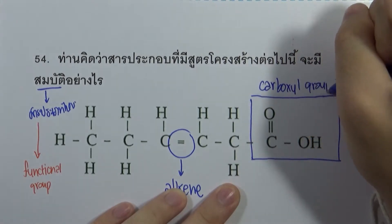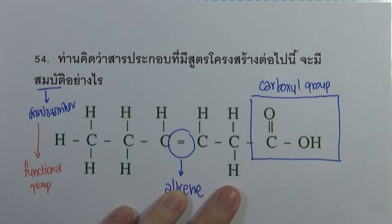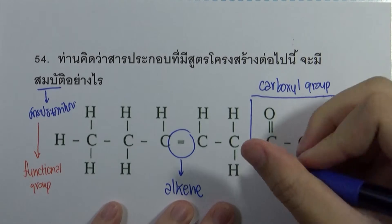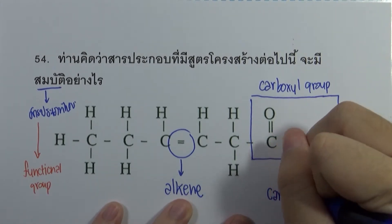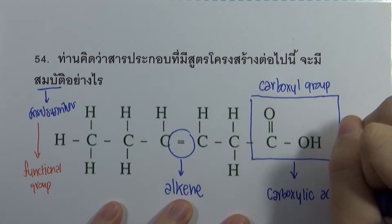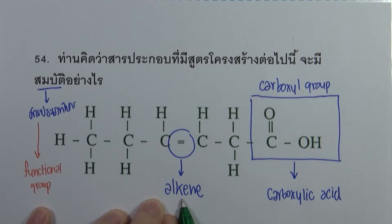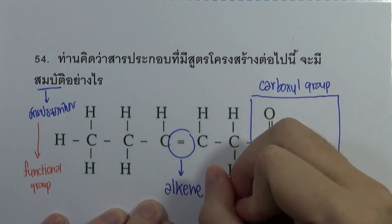Carboxyl group right now — carboxylic acid. Therefore, if we see that we have a function which is a different species, the substance of it goes down to the function. Like that, if we have the same function of Alkene, then the substance of it goes down to Alkene.